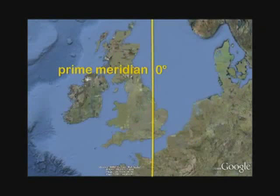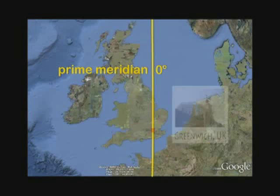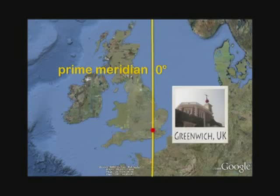Zero degrees longitude is called the prime meridian. It passes through the Royal Greenwich Observatory in Greenwich, England.